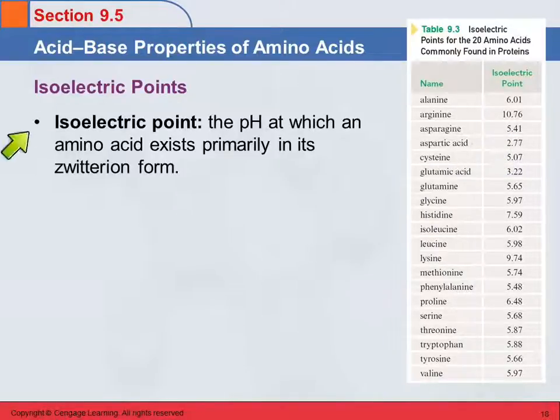So what the isoelectric point means is the pH at which it's primarily in its zwitterion form. If you go higher pH, you add more hydroxide. You're going to deprotonate the NH3+, and you'll end up with a negative one charge. If you go below, significantly below the isoelectric point, adding acid, then you'll end up with a positively charged ion.